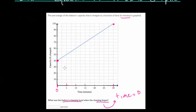At 0 minutes before we start charging the battery, it's at a 40% charge. So that is the answer to the question. 40% was the battery's charging level when the charging began.